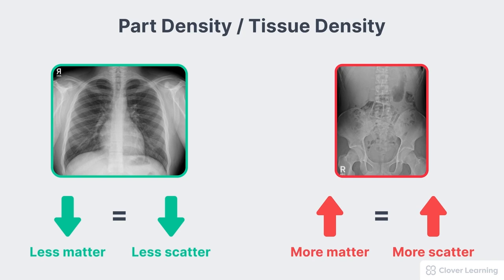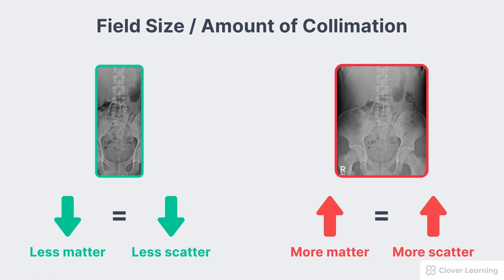One more way we apply this principle is in regards to field size or the amount of collimation. If we decrease the collimation or use a larger field size, there's more matter being exposed, therefore more scatter and lower contrast. The opposite is true for reducing scatter: if we increase the collimation or use a smaller field size, there's less matter being exposed, therefore less scatter and higher contrast.